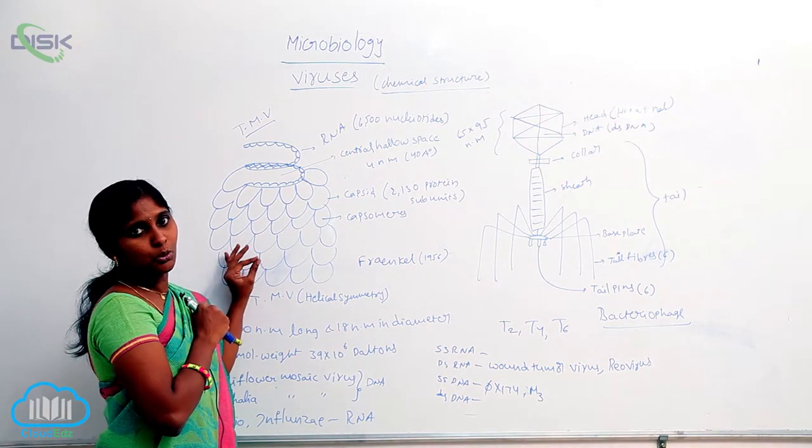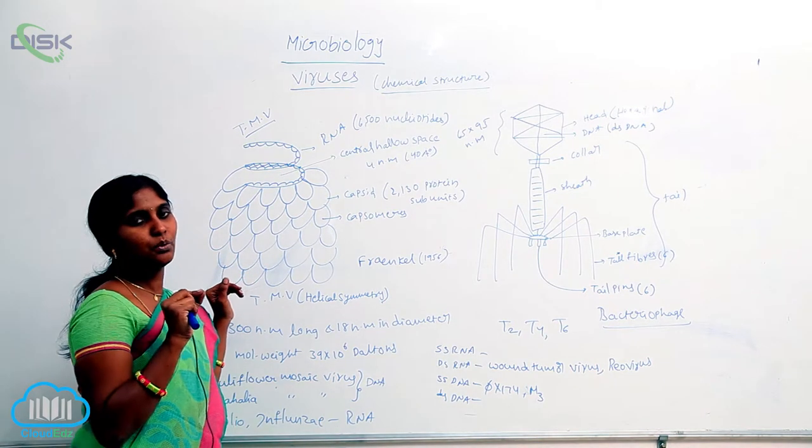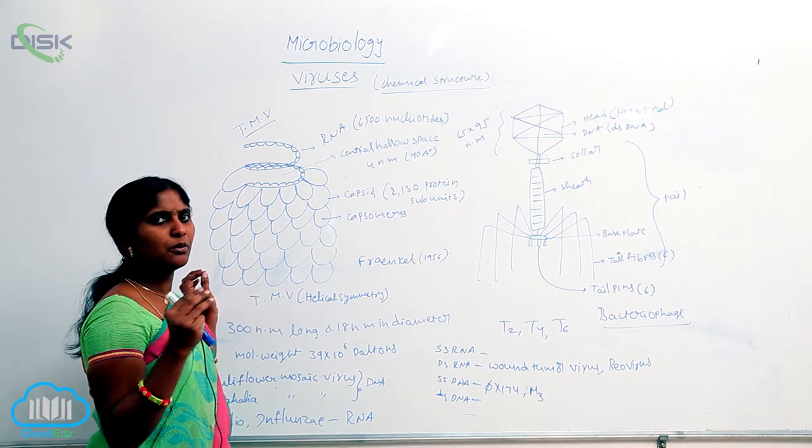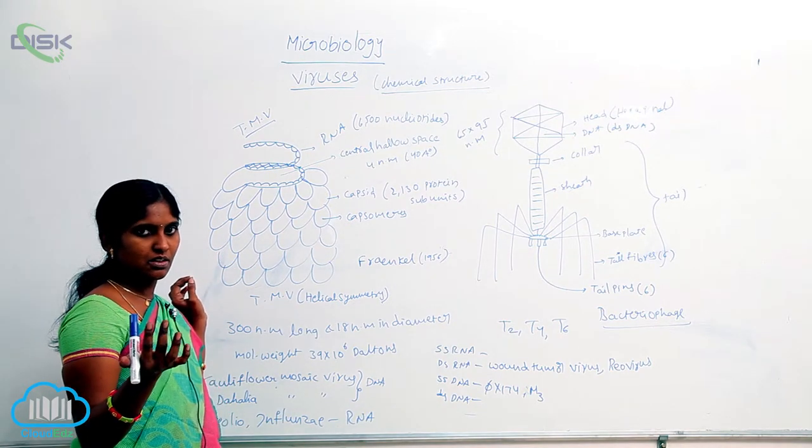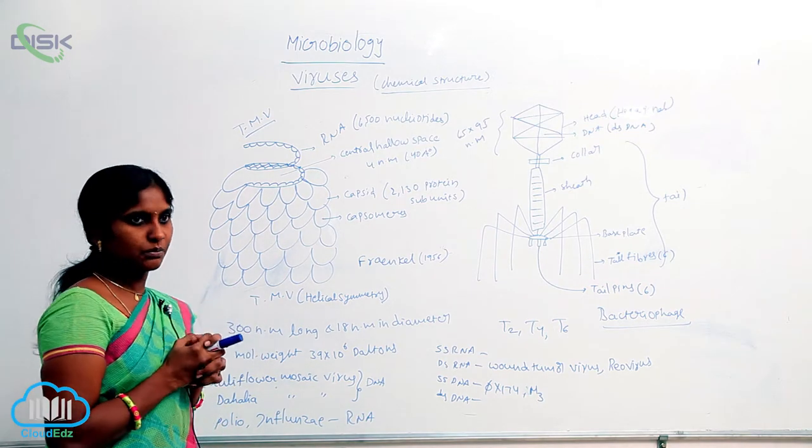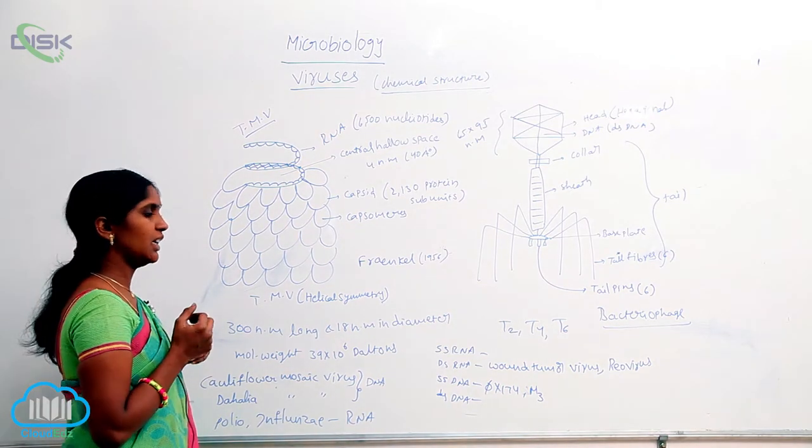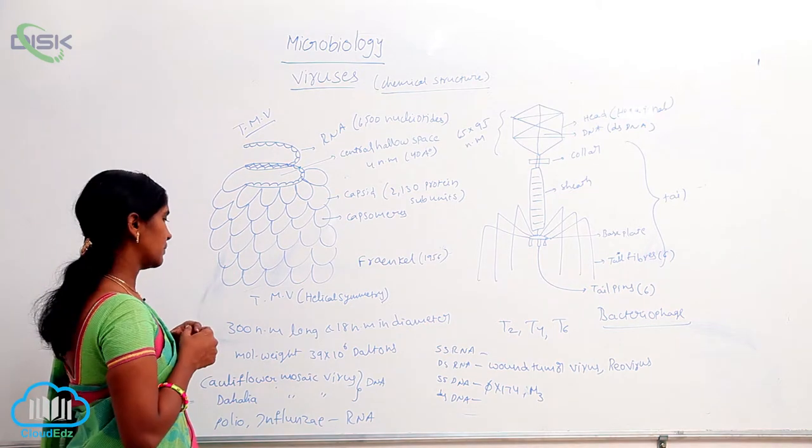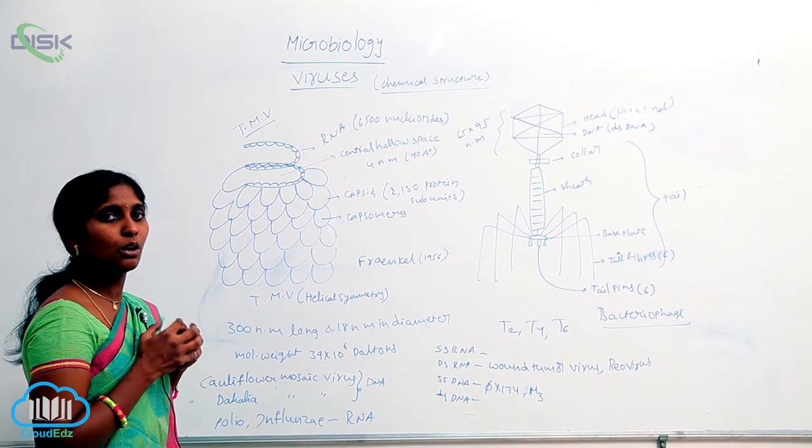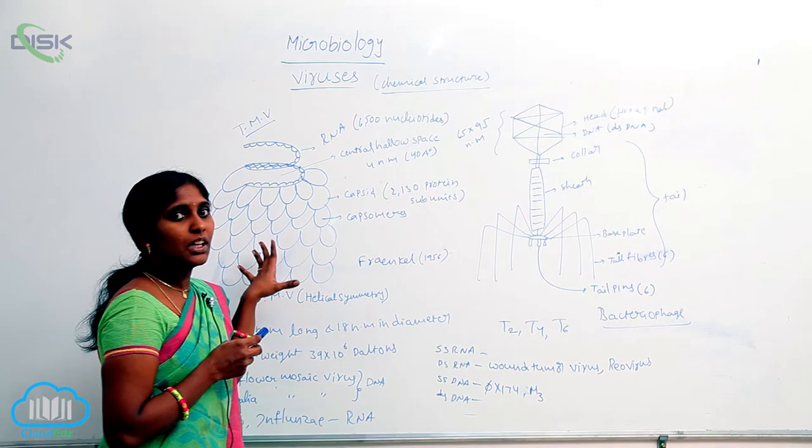So, approximately 2130 protein subunits are present. Each subunit is called capsomere. So, capsid is nothing but a protein subunits combination. Capsomeres are present. Next, the size of the TMV. The size of the TMV is 300 nanometers long and 80 nanometers diameter. The molecular weight of the TMV is 39 into 10 to the power of 6 Daltons. So, this is about the TMV.